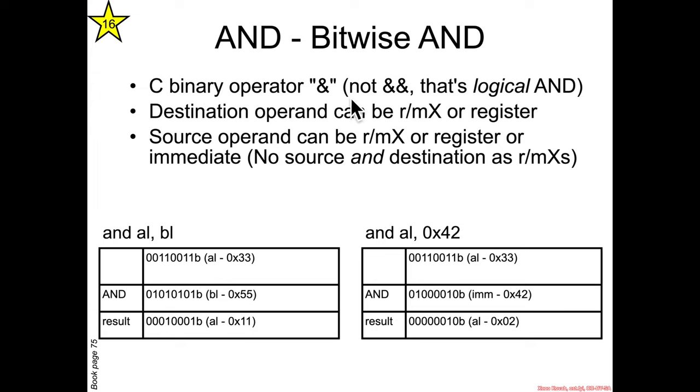In C the binary operator single ampersand, not the double ampersand, is going to be your bitwise AND. Double ampersand is the logical AND.